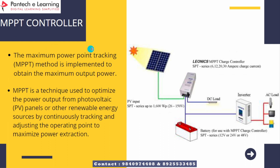By using the MPPT controller, which is very important in this quadruple boost inverter — MPPT stands for Maximum Power Point Tracking — this method is implemented to obtain maximum output power. It plays a crucial role in this project involving the new single-source multi-level inverter. Using this technique, the power output from PV panels or other renewable energy sources is maximized by continuously tracking and adjusting the operating point. The MPPT controller ensures that the inverter operates at optimal voltage and current levels to maximize power conversion efficiency, continuously monitoring the output voltage and current of the renewable energy source and adjusting operating conditions to achieve the maximum power point.